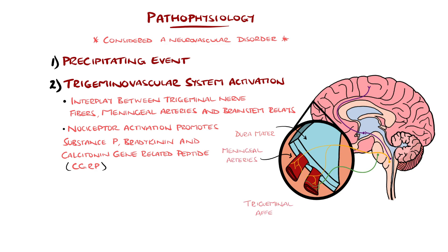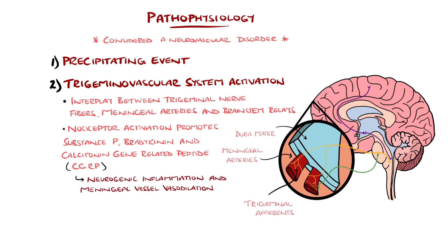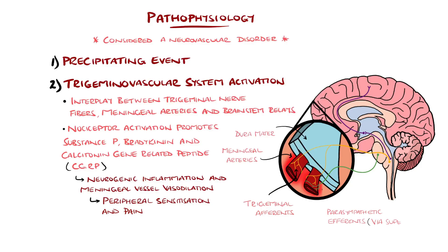Release of these molecules promotes neurogenic inflammation and vasodilation of the meningeal arteries, which is linked to migraine pain, but also sensitizes peripheral receptors to such an extent that even non-painful stimuli like light can become painful. This links to the previous vascular theory where vasodilation was thought to be the main driver, however it is now thought to be more linked to instability in these neurovascular mechanisms.